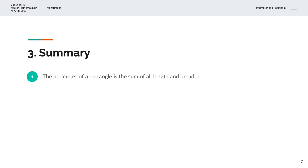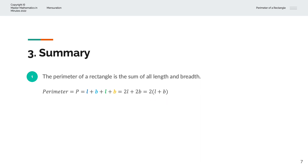To summarise, the perimeter of a rectangle is the sum of all lengths and breadths, and it is given by length plus breadth plus length plus breadth, or 2L plus 2B, or 2 into L plus B. Thank you very much for watching. This is Master Mathematics in Minutes.